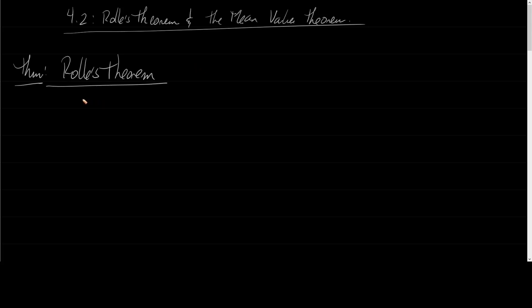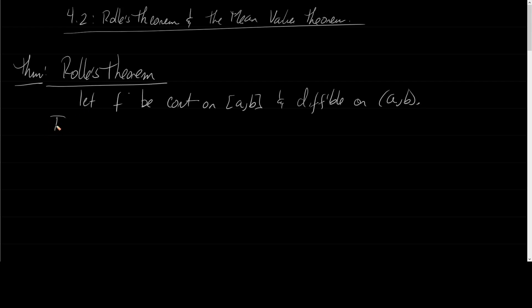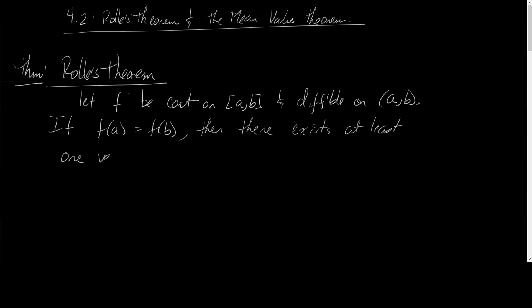Here is what Rolle's Theorem says: Let F be continuous on the closed interval AB, and differentiable on the open interval AB. If F of A equals F of B, so if the value of the function is the same at either endpoint of the closed interval, then there exists at least one value of C in the open interval from A to B such that F prime of C is equal to zero.